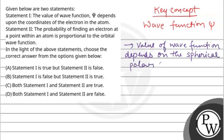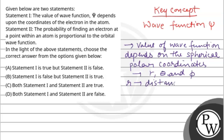The value of wave function depends on the spherical polar coordinates: r, theta, and phi — where r is the distance from the nucleus, theta is the co-latitude, and phi is the azimuth.